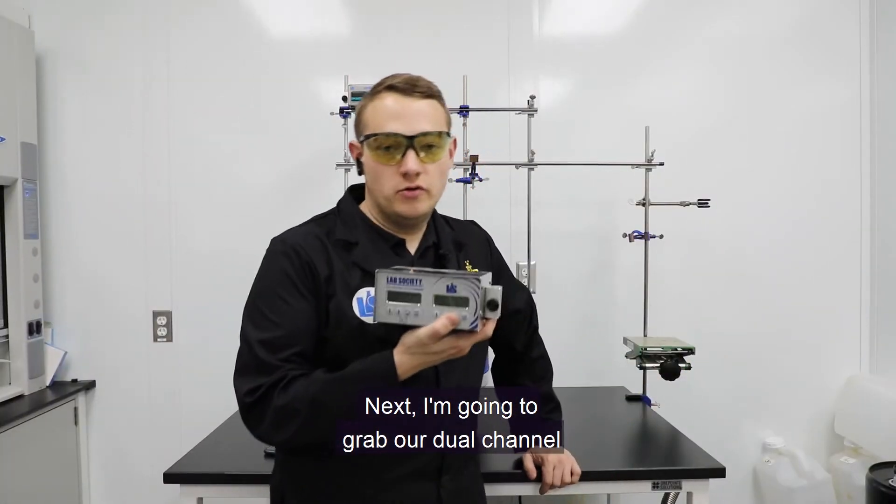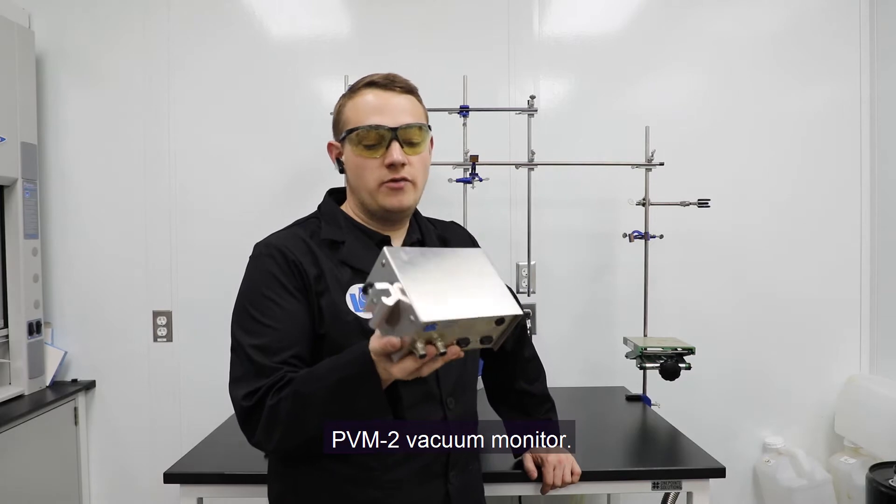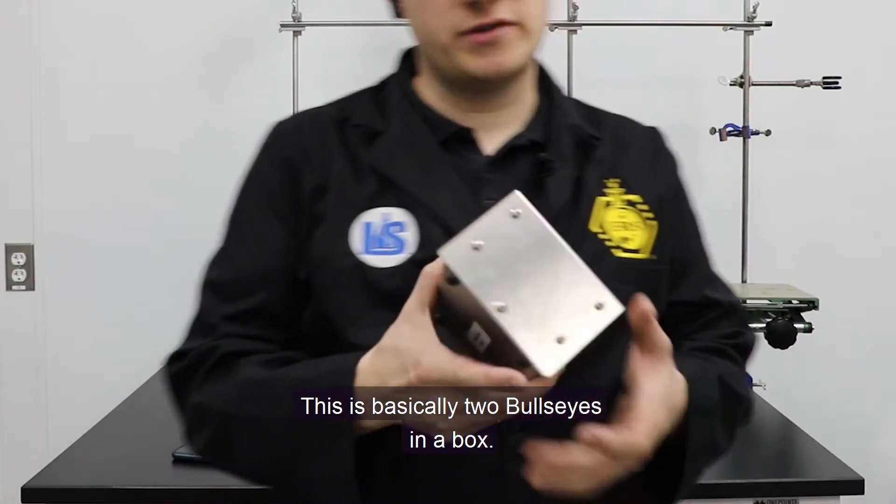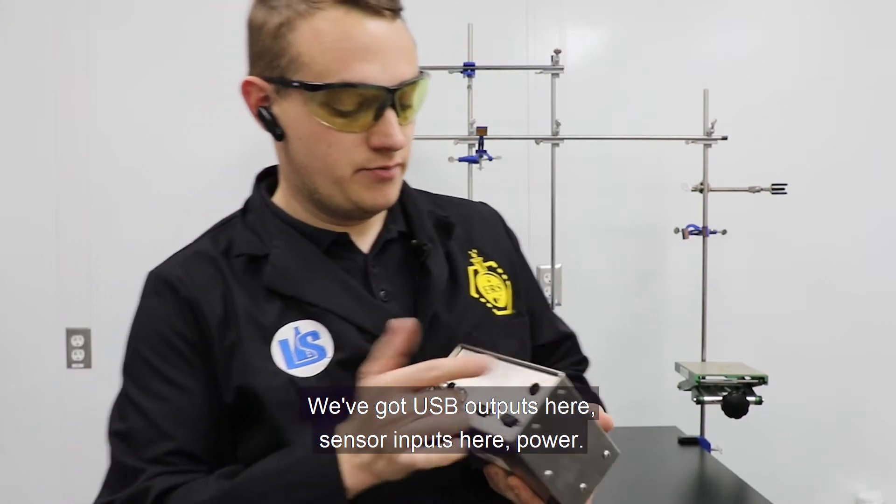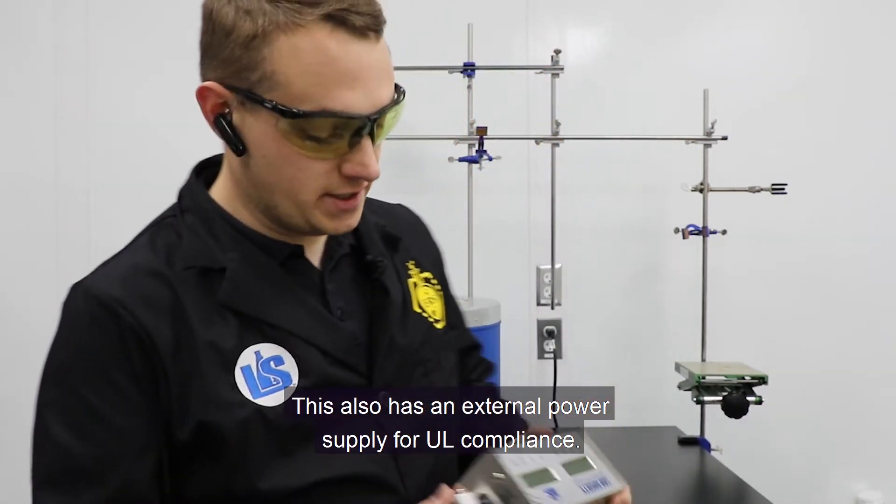Next, I'm going to grab our dual-channel PVM2 vacuum monitor. This is basically two bullseyes in a box. We've got USB outputs here, sensor inputs here, power. This also has an external power supply for UL compliance.